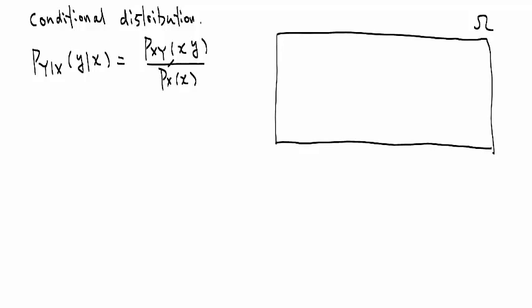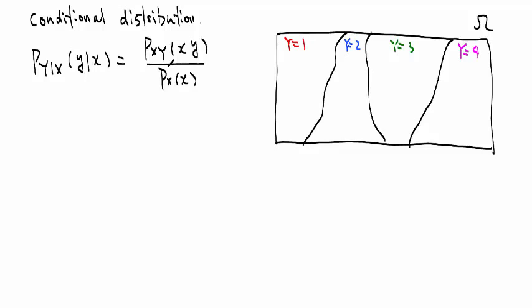Suppose there is a random variable Y and it can take four possible values. In this range, Y equals 1. In this range, Y equals 2. And there's another range — let's call that Y equals 3. And finally, in the last part, Y equals 4. So Y takes four values and the probability of these four different sets give you the distribution of Y, P_Y(y). This is defined for Y equal to 1, 2, 3, or 4.